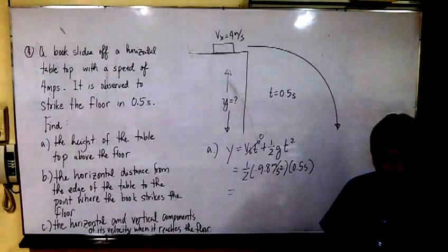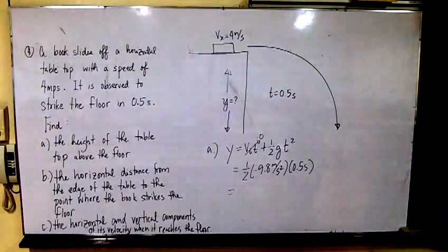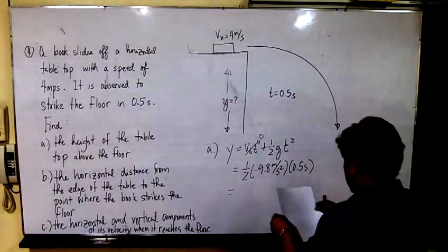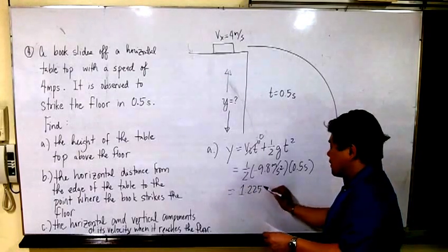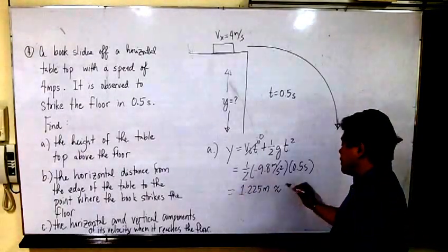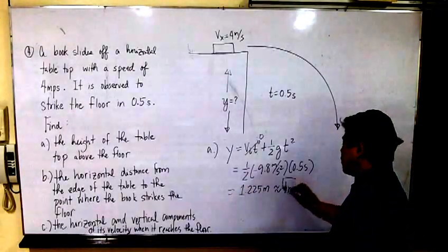Solving for this in your calculator, you will get 1.225 meters. This is rounded off to just 1 meter.